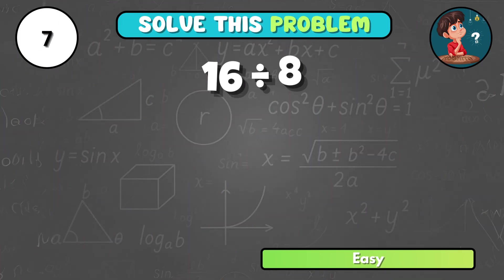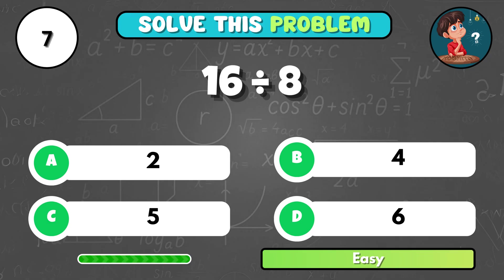What number do you get when 16 is divided by 8? It's A, 2.